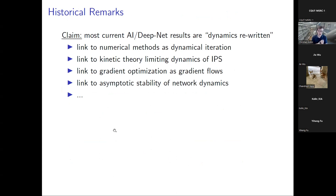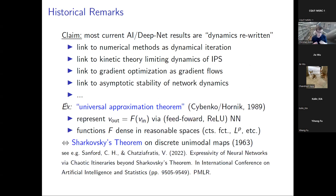My claim is that most current AI or deep net results are in some sense dynamical results rewritten. There are lots of links to classical numerical methods, kinetic theory, gradient optimization, asymptotic stability. You just have to reinterpret classical results about nonlinear dynamics correctly, and many theorems will fall out. For example, the famous universal approximation theorem attributed to Cybenko and Hornik from 1989 — that certain feedforward networks with ReLU coupling can approximate functions in reasonable spaces — is effectively a compositional theorem.